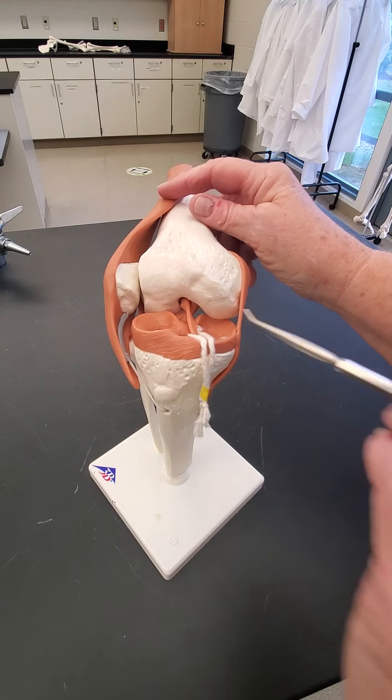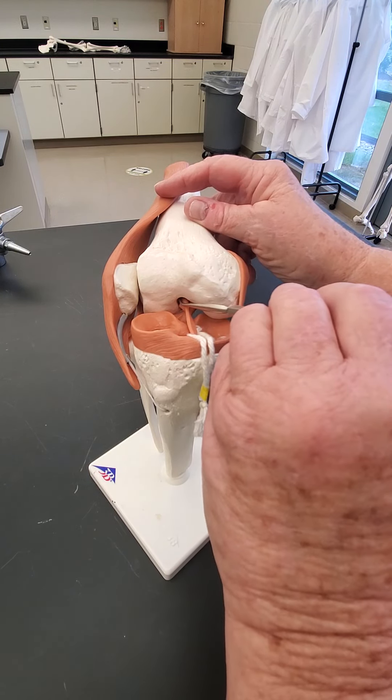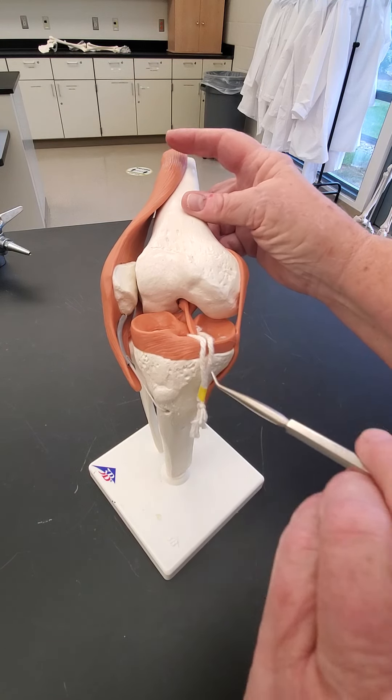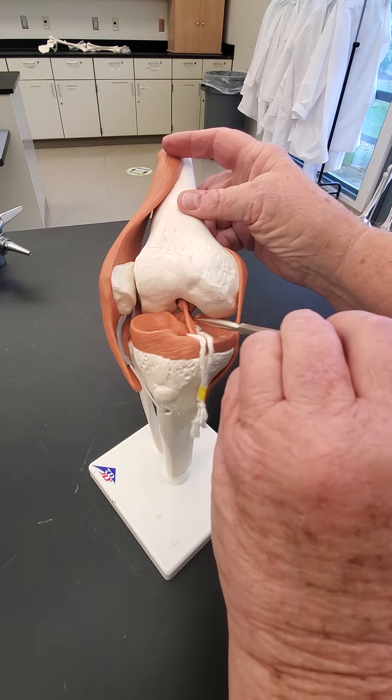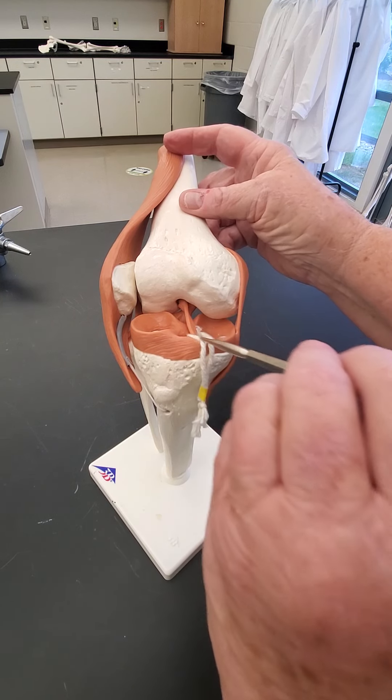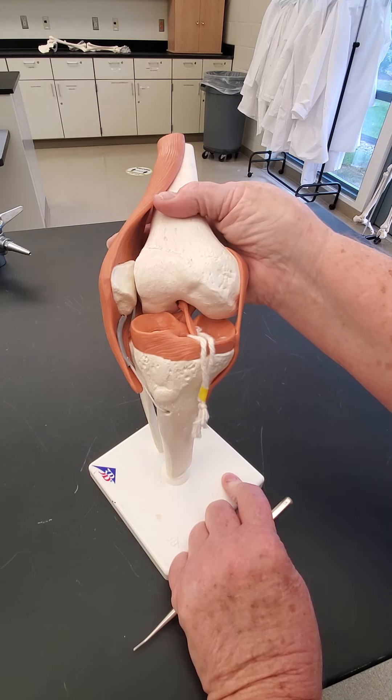this is our anterior cruciate right here. It comes from the posterior part of the intercondylar notch to the front. And then behind it, you can see the posterior cruciate ligament. The anterior cruciate ligament is the one that's more commonly torn, and there are multiple reasons for that.